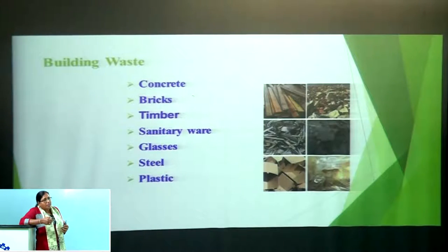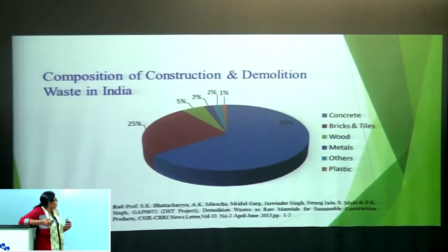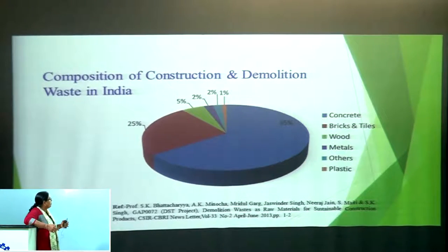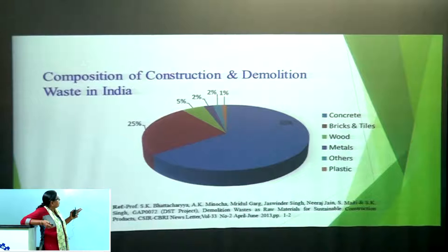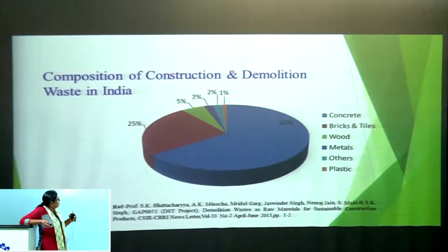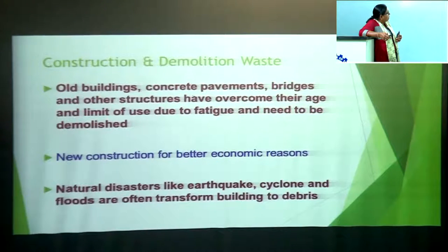Building waste consists of concrete, bricks, timber, sanitary ware, glass, steel, and plastic. A study by Bhattacharya et al. in India found, based on weight: concrete is 65%, masonry brick and tile is 25%, wood is 5%, metals 2%, plastic 1%, and others 2%. Construction and demolition waste is generated from demolition of old buildings, concrete pavements, bridges, and other structures.